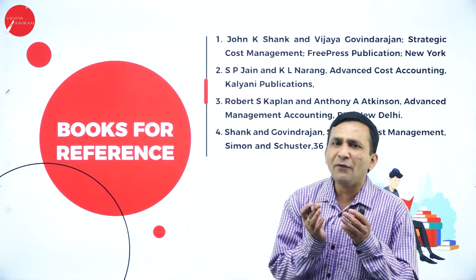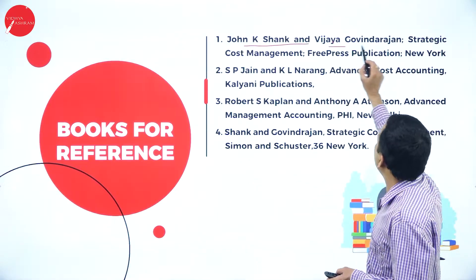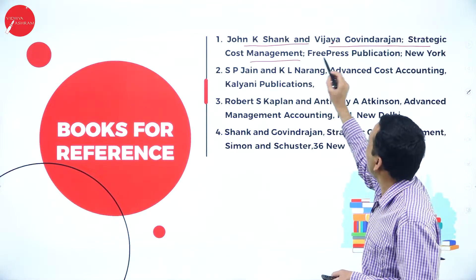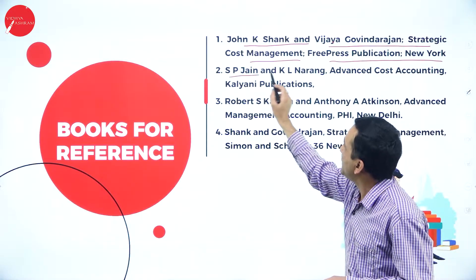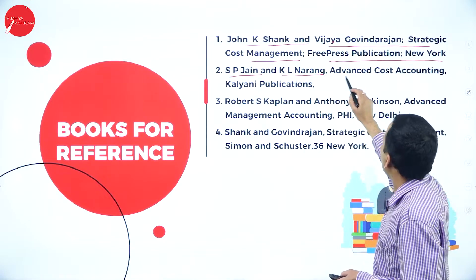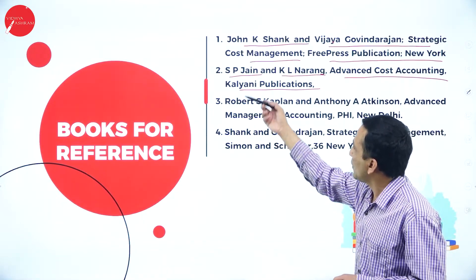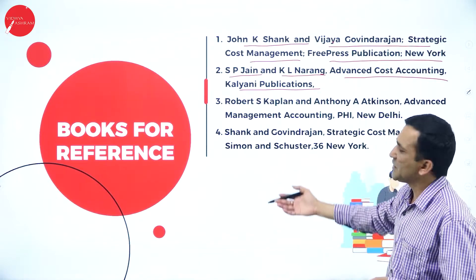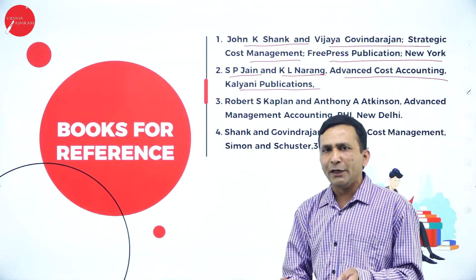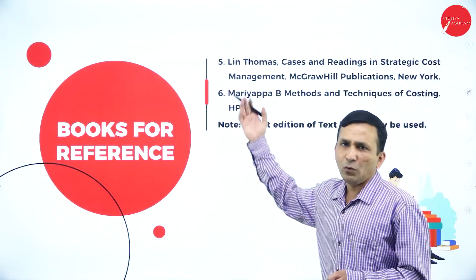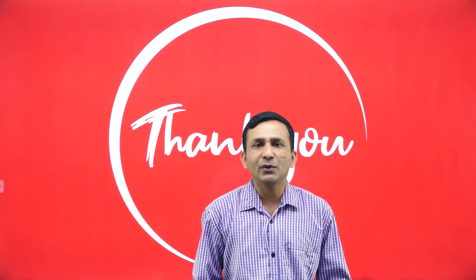There are a few textbook references: Janke and Vijay Gangudri, Strategic of Fast Management, Professor Publication New York; and S.B. Jain and K.L. Naranga, Advanced Cost Accounting, Kalyani Publication. Notes will be provided, but you can also refer to these textbooks. Keep watching for the next section. Thank you.